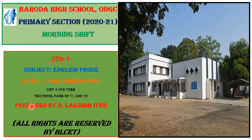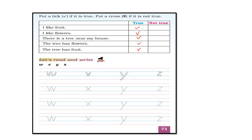Children, we are in page number 71 and 72 of your Marigold textbook. We are going to continue the exercise given in page number 71.